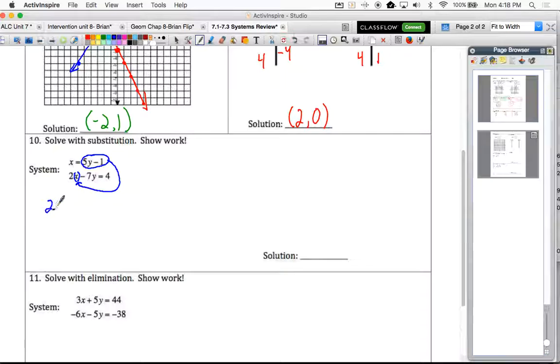Or actually, we'll rewrite the second equation. So 2 times 5y minus 1 minus 7y equals 4. Now let's do the distributive property.